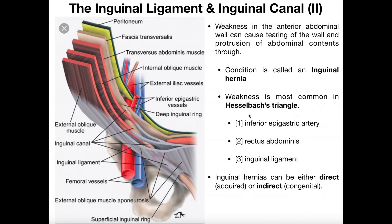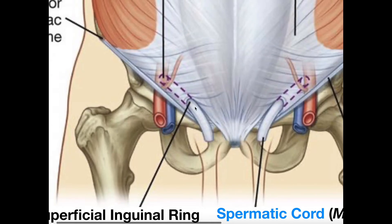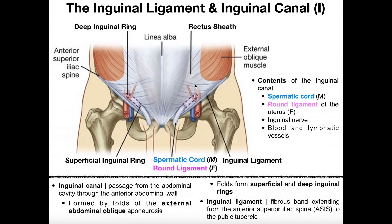A man named Hesselbach determined that there's a specific spot where the tissue is automatically the weakest and therefore more susceptible to an inguinal hernia — it's called Hesselbach's triangle. It has three boundaries: the inferior epigastric artery, the rectus abdominis, and the inguinal ligament. This triangular region is where the tissue is weakest by default — not due to any particular movement — and is where you'd be most susceptible to tearing, which is what's referred to as an inguinal hernia.